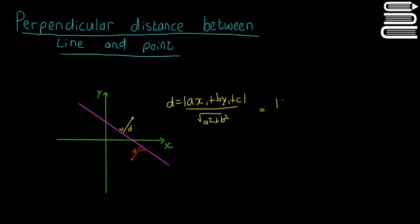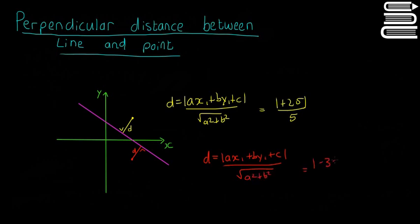Say for example we get our answer as plus 25 divided by 5 for the yellow point. We do the same for the red one: D equals ax₁ plus by₁ plus c, all divided by the square root of a squared plus b squared, and this time our answer is minus 30 over 5. The modulus will get rid of the plus or minus when we're just looking for distance, but the sign tells us which side of the line a point is on. Because one is minus and one is plus, that tells us they're on opposite sides of the line.